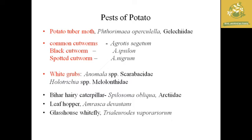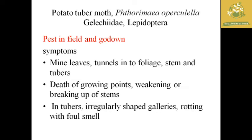The first pest is the potato tuber moth, whose scientific name is Phthorimaea operculella, belonging to the family Gelechiidae and order Lepidoptera. It is said to be a field as well as a godown pest, attacking plants in the field as well as after post-harvest. The major symptoms we can see in the field include mining of leaves, tunneling of foliage, and tunneling in stems as well as tubers.